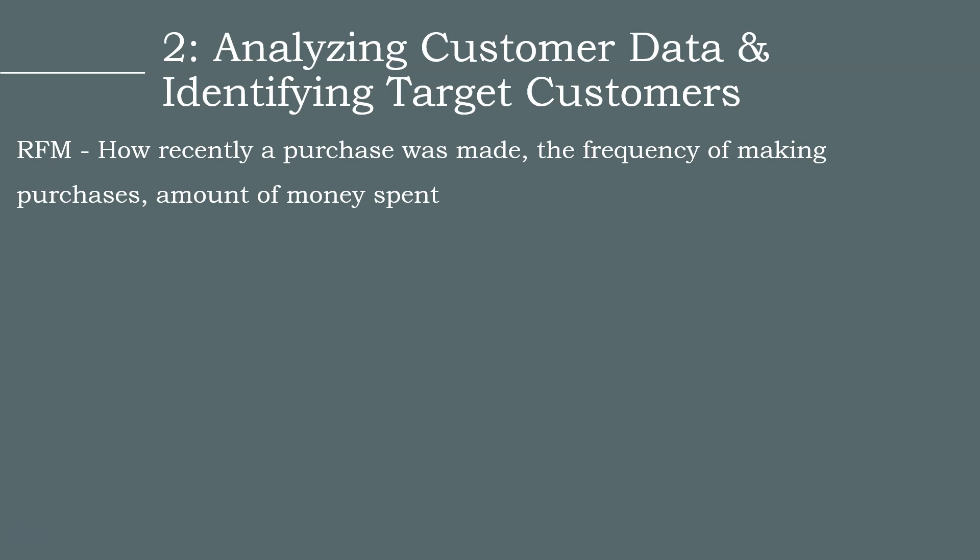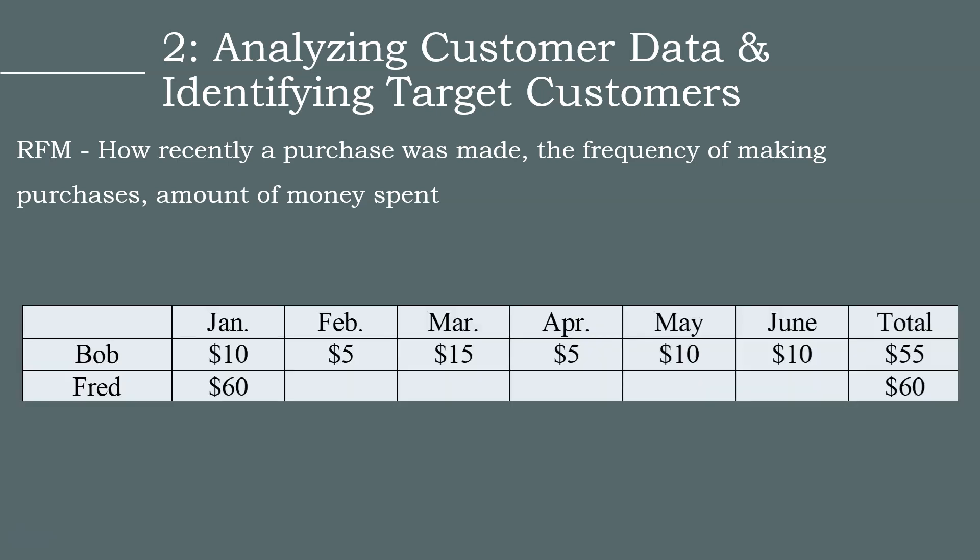R stands for how recently a customer made a purchase. F stands for how frequently they make purchases. And M stands for how much money they spend in our store. By analyzing these factors, we can identify the most profitable customers to target. I created a chart to demonstrate how RFM analysis can be used to determine which customer is more profitable for a retailer.